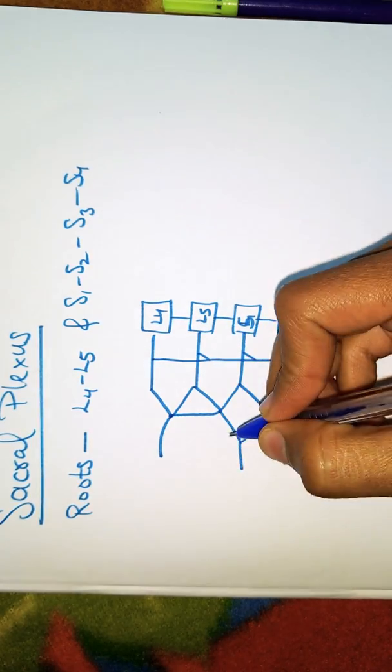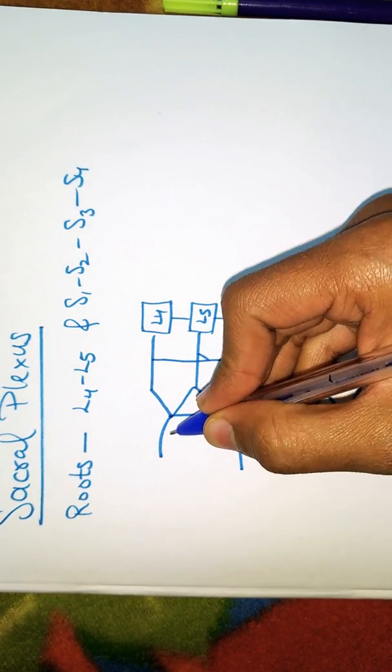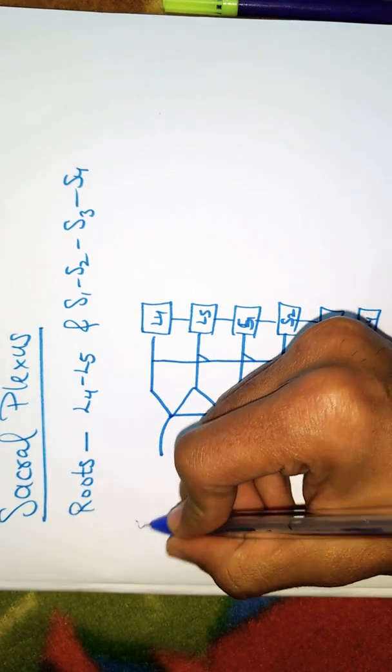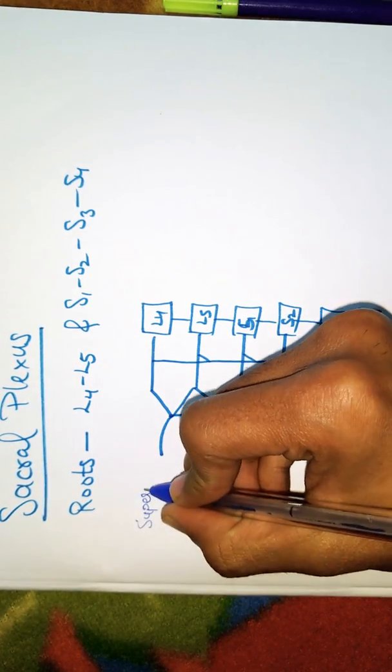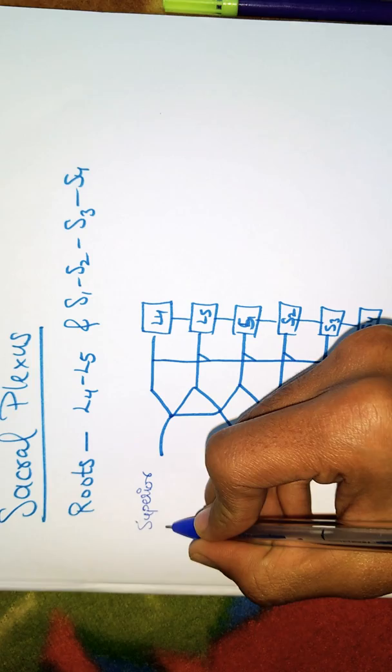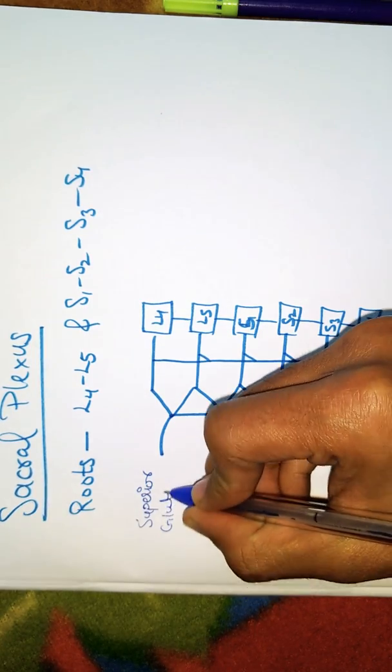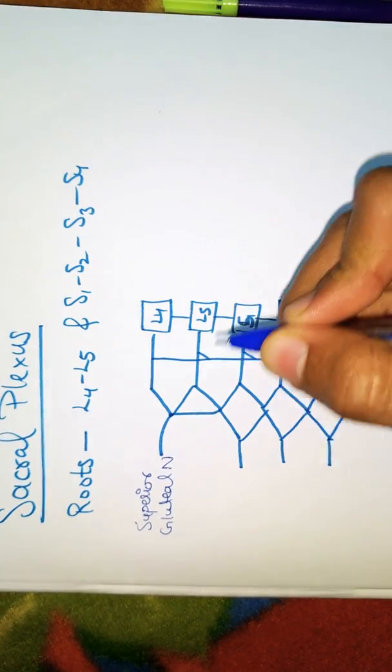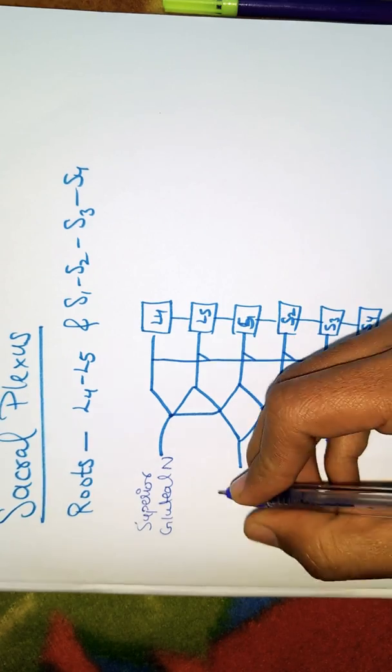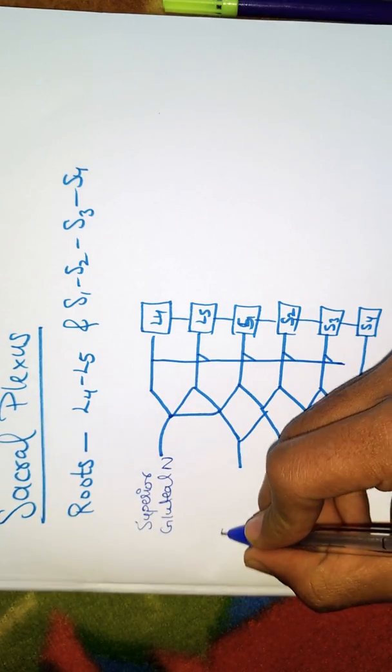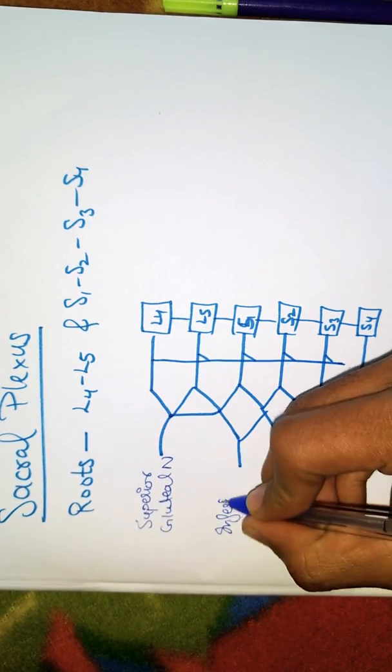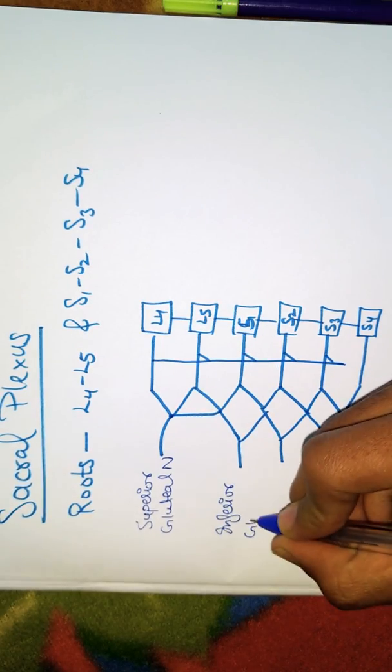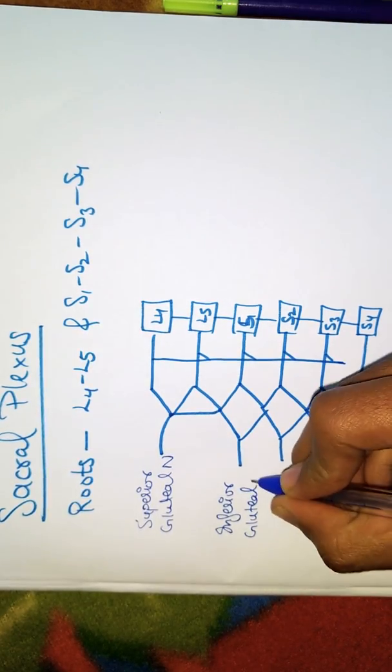This is the first nerve. On the upper hand, this is the Superior gluteal nerve. Below that is the Inferior gluteal nerve.